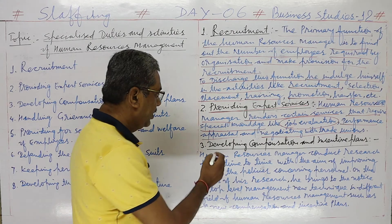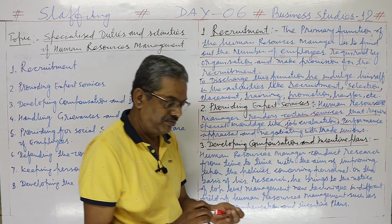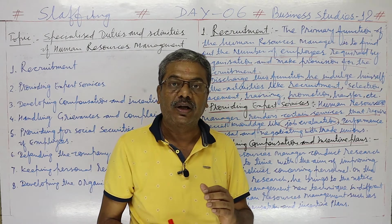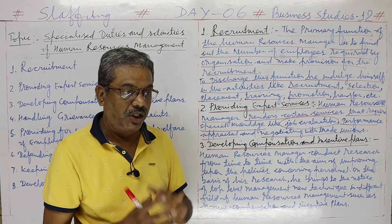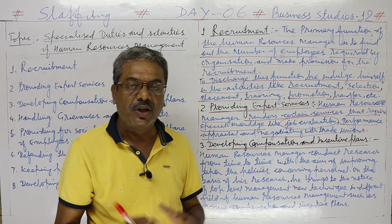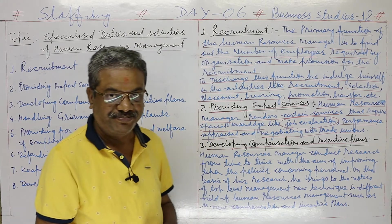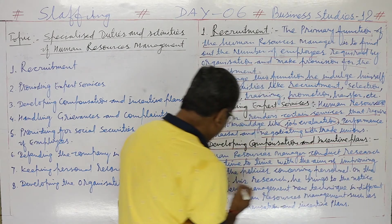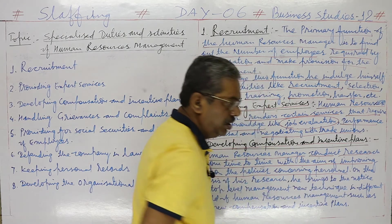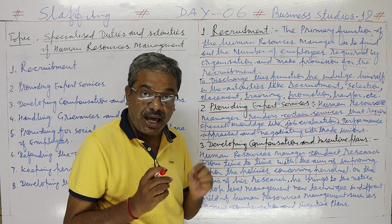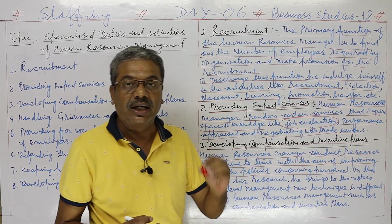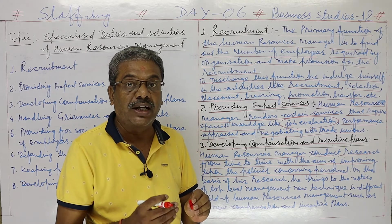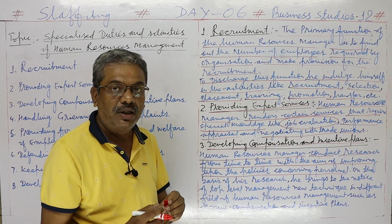Number three activity: Developing Compensation and Incentive Plans. The salary and wages given to workers — plus rewards given beyond that, which are called incentives — how to develop these is the work of Human Resources Management. The HR manager conducts research from time to time with the aim of improving policies concerning personnel and improving compensation and incentive plans.